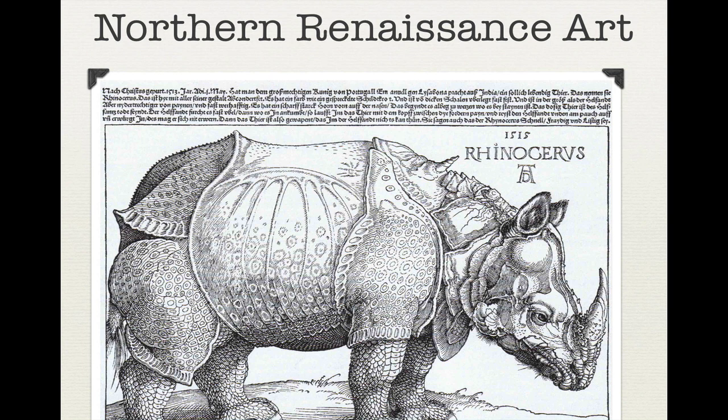Impressively, Dürer had actually never seen a rhinoceros before making this piece — he based his engraving on written observations of other people. Although the piece is somewhat inaccurate, as rhinos don't really have plates of armor as their skin, the people of northern Europe put a lot of faith in its accuracy and believed this was what rhinos looked like until they were corrected in about the 18th century. These pieces by Dürer really highlight the elements of the natural world seen in the northern Renaissance.